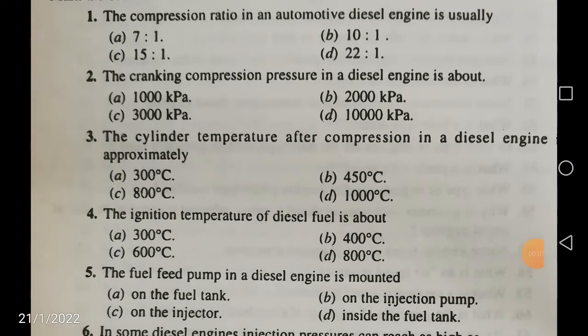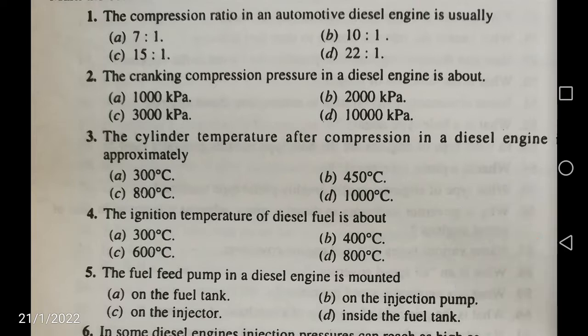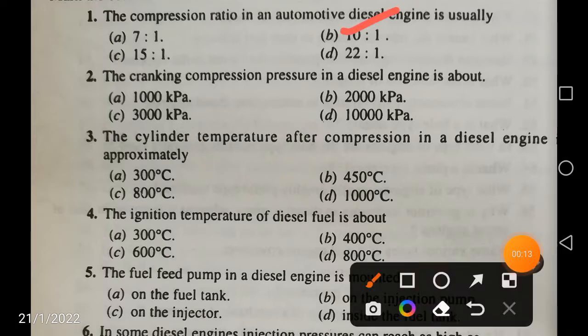Friends, the compression ratio in an automotive diesel engine is usually between 22 to 1. Normally in petrol engines it is 6 to 10, and in diesel engines it will be 10 to 22. So the maximum is 22.